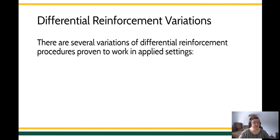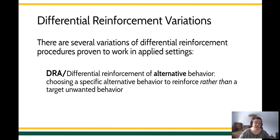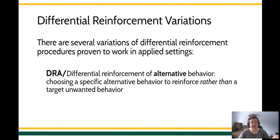So when we're talking about these variants, we know that there are several ways you can use this in applied settings. One of them is what's called differential reinforcement of alternative behavior. That means we're going to specify something else to do instead of a problem behavior that we're trying to decrease. We're picking something else and reinforcing that behavior, while the behavior we're trying to decrease we're no longer going to reinforce. We abbreviate this as a DRA procedure.